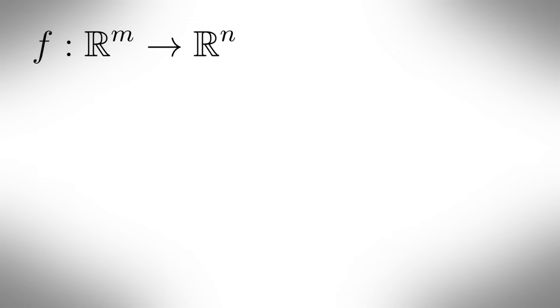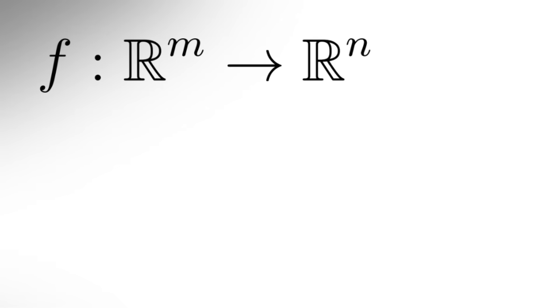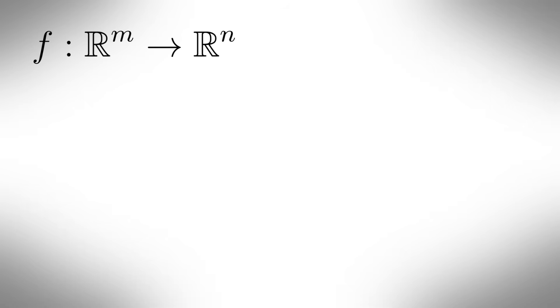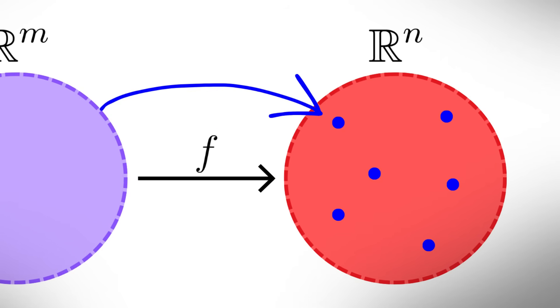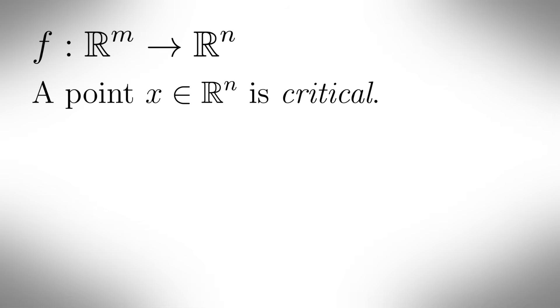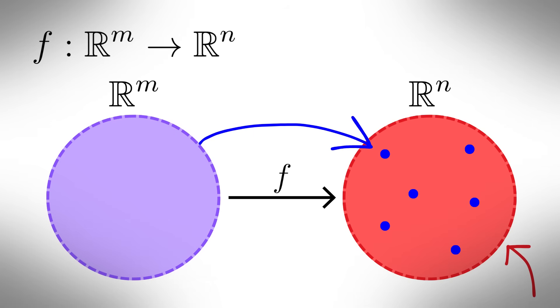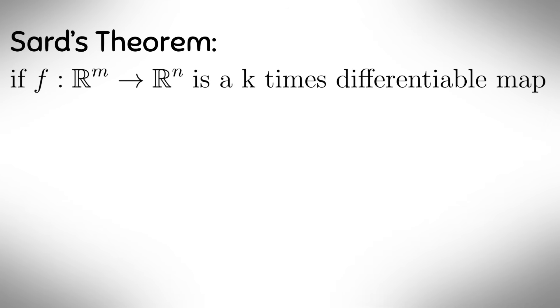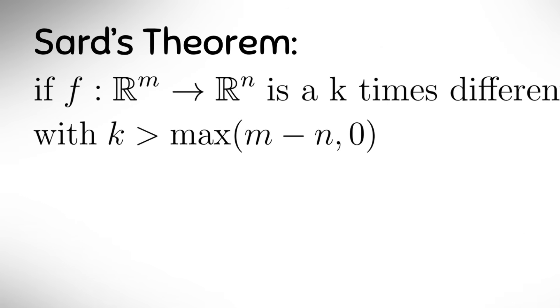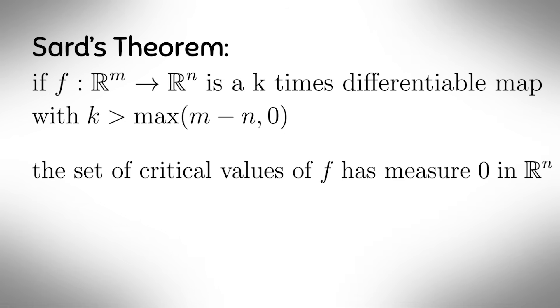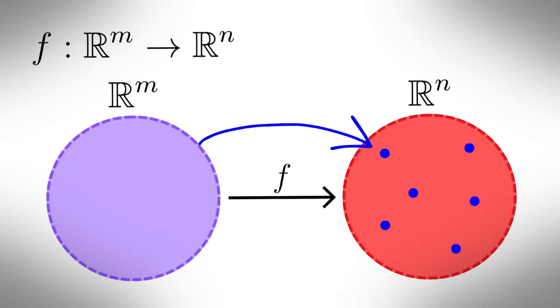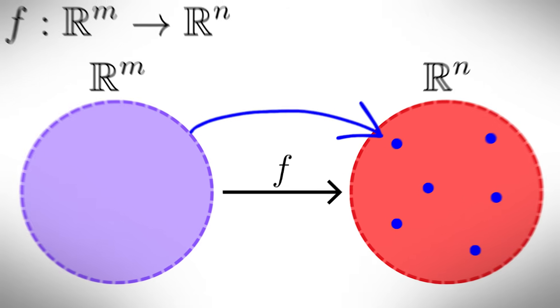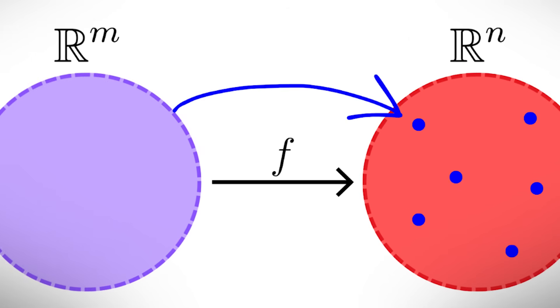Sard's theorem. Suppose we have a smooth map from the reals to the m to the reals to the n, we want to know what kinds of points in the reals to the n can be hit by f. The critical values of f are the images of the critical points, so the remaining points in the image are regular values. Sard's theorem states that if the reals to the m to the reals to the n is a k differentiable map with k greater than the max of m minus n and 0, then the set of critical values of f has measure 0 in the reals to the n, or in simpler terms, almost every point in the target in the sense of the Lebesgue measure is a regular value.